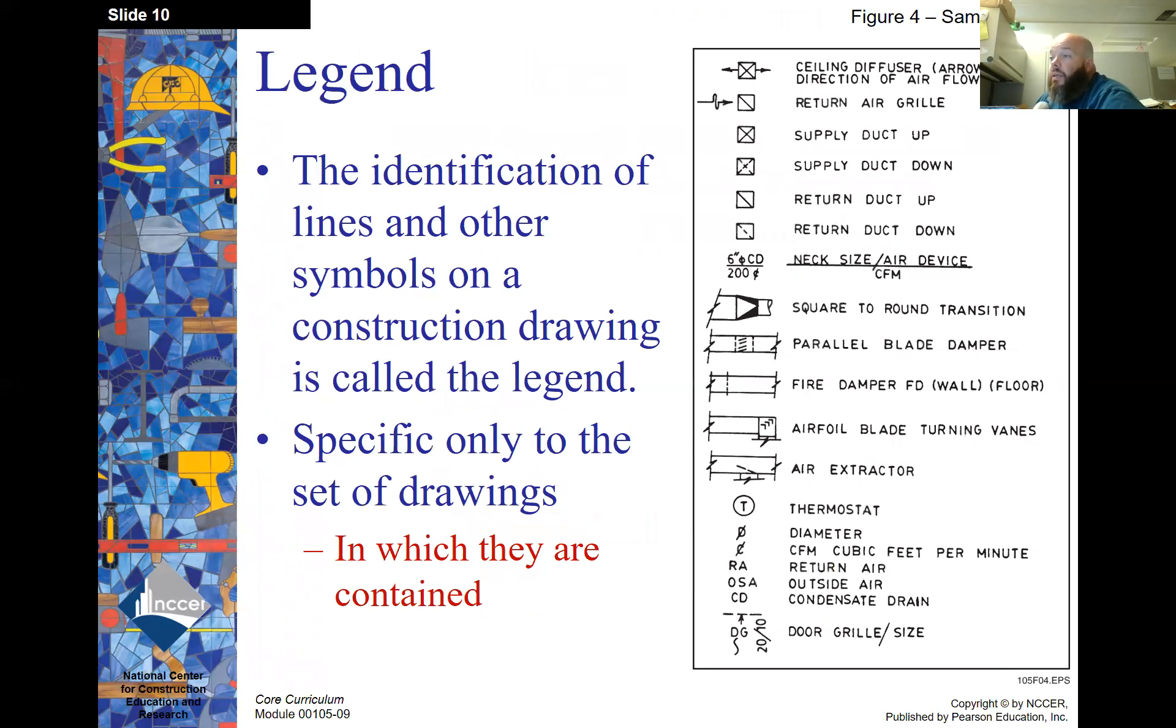In the legend, it's the identification of lines and other symbols on a construction drawing is called the legend. Specific only to the set of drawings in which they are contained. Any of you guys learned to read a map? Maps also have legends. You're using symbols because you're drawing a two-dimensional drawing and you have to have a way to designate and differentiate certain things.